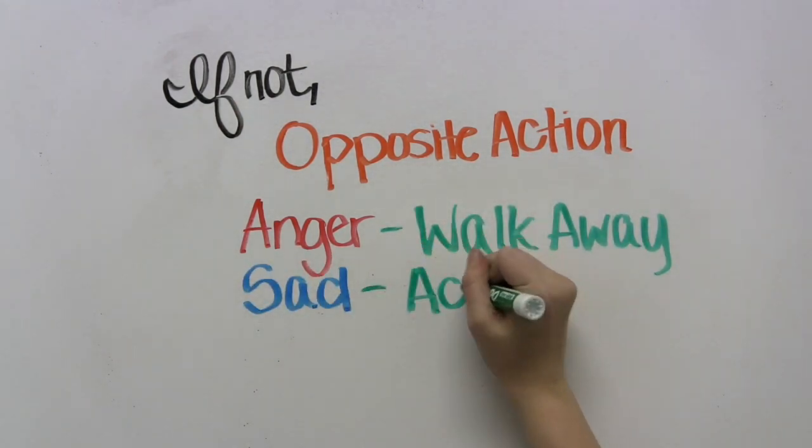Next, Marie needs to identify her action urges. When she is feeling sad and guilty, she gets the urge to stay in bed, cry, watch sad movies, and ignore her friends and her responsibilities.